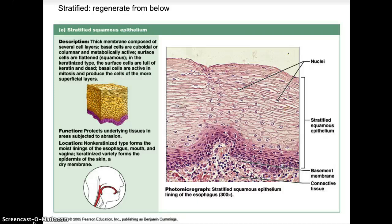We ended our last lecture in histology lecture one looking over the stratified squamous epithelial tissue. Stratified tissue is regenerated from below. The stratified squamous epithelial is a thick membrane composed of several cell layers. The basal cells are cuboidal or columnar and metabolically active. The surface cells are flattened squamous. In the keratinized type, the surface cells are full of keratin and are dead. The basal cells are active in mitosis and produce the cells of the more superficial layers. The function is to protect underlying tissues in areas subjected to abrasion.